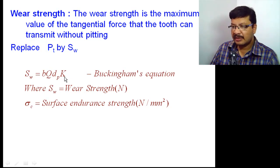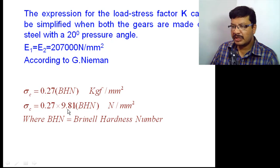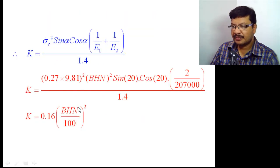The surface endurance strength depends on the k value. This lengthy equation for k can be simplified using Niemann's assumption: for a 20-degree pressure angle and steel gears, E1 and E2 take specific values. With respect to Brinell hardness number, Niemann derived sigma_c = 0.27 × 9.81 × BHN N/mm². After simplifying and substituting, k = 0.16 × (BHN/100)².